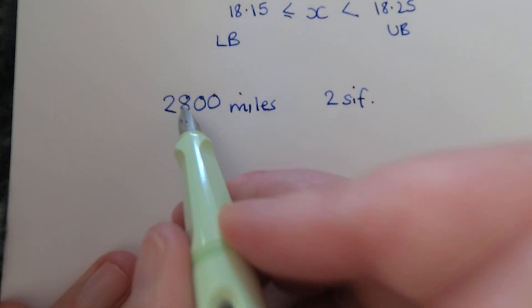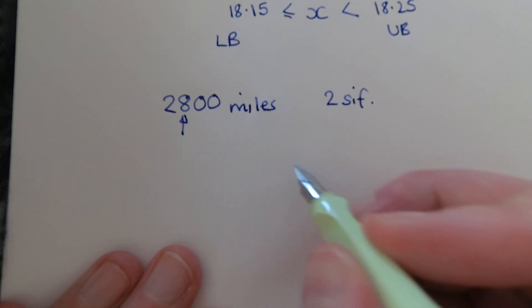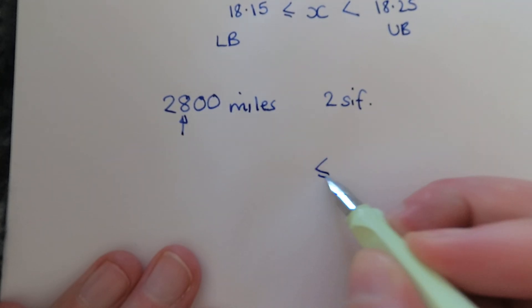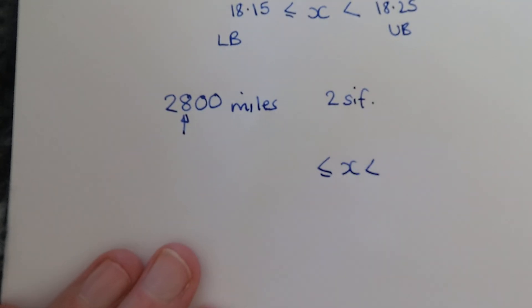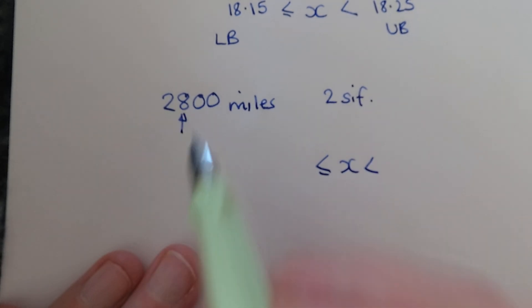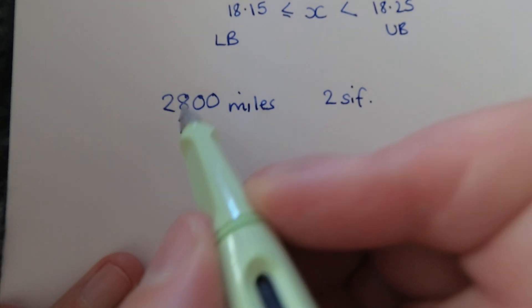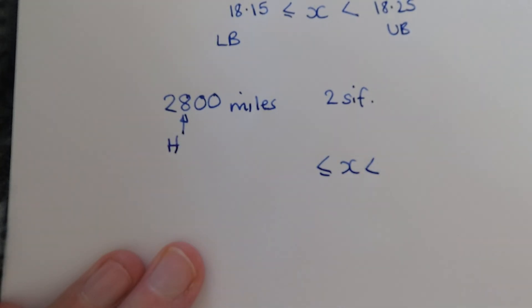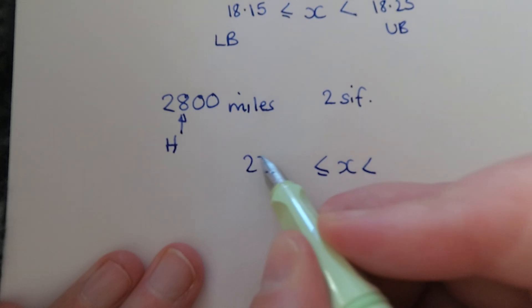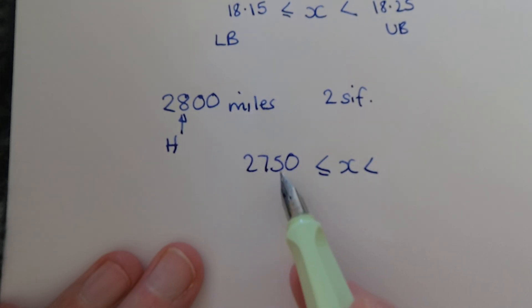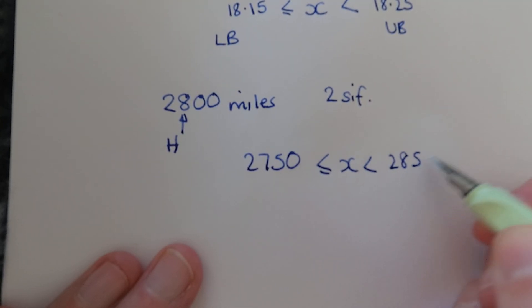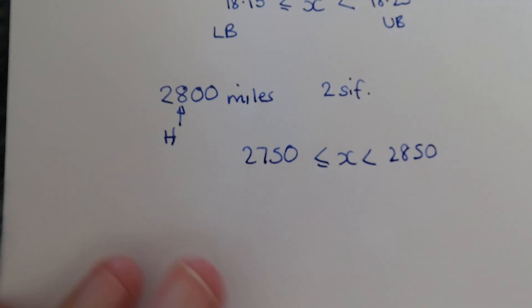Again, let's call it x, let's get our inequalities set up so we know it's going to look like that. What's going to round up to 2,800 to the nearest 100, which is the place value that that is in, hundreds? Well, it's going to be 2,750. 2,750 would round up to 2,800, but 2,850 would round up to 2,900, so it can't be that but it can be everything strictly less than that. So lower bound, upper bound, error interval.